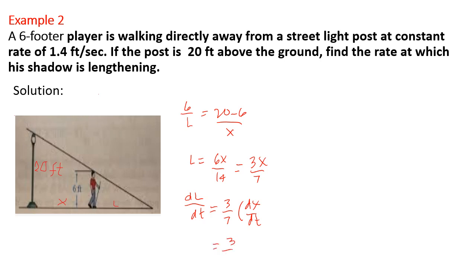Substituting dx over dt equals 1.4 feet per second, dl over dt equals 3 over 7 times 1.4, which equals 0.6 feet per second.